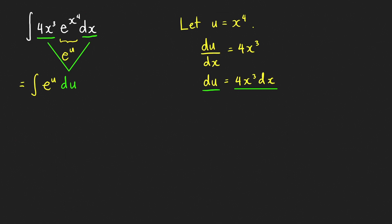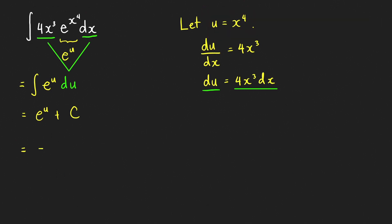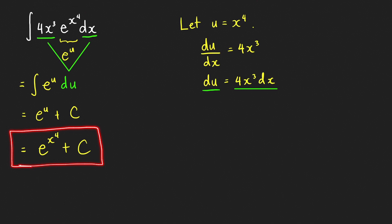Using the formula for this integral, we get e to the u plus the arbitrary constant c. Since we're integrating with respect to x, our answer should be in terms of x, so we substitute back using u equals x raised to 4. The final answer is e raised to x raised to 4, plus c. You may check this by differentiating using the exponential rule with the chain rule.